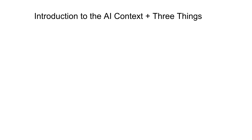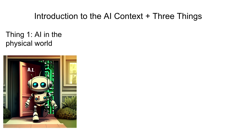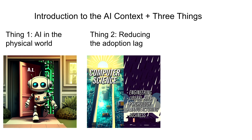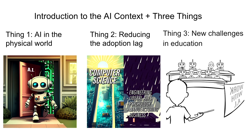So I'm going to talk about three things. I'm going to introduce the context of AI and then speak about three things. The first is AI in the physical world. Next, I'll talk about reducing the so-called adoption lag, which is actually a very complex issue. I'll try to make it simple and present the view we have to take as a nation in terms of various investments to help AI trigger greater growth in our economy. And lastly, I'll present the new challenges that AI poses, particularly in education.